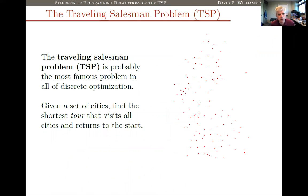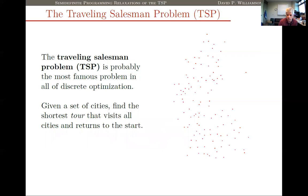Although I'm talking to an audience that I'm sure is very familiar with this topic, I want to make sure everybody is on the same playing field. For some of you this will be a review; for others, hopefully it'll be enough of an introduction to follow the rest of the talk. The traveling salesman problem is probably the most famous problem in all of combinatorial optimization. Given a set of cities and costs for traveling between them, we'd like to find the shortest tour that visits all the cities and returns to the start.